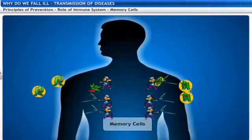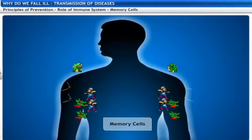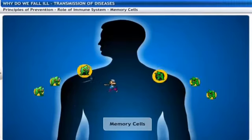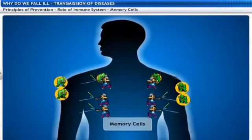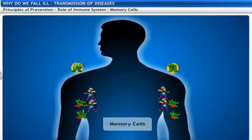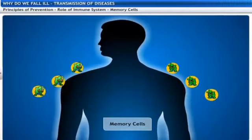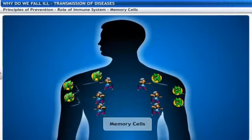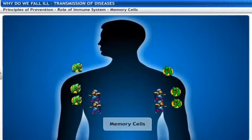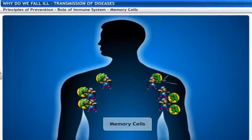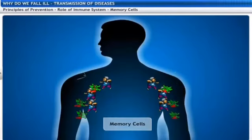These memory cells have a huge role to play. The immune system cells include memory cells among numerous other cells, but memory cells are one of the major types - they are said to be the soldiers of the body.